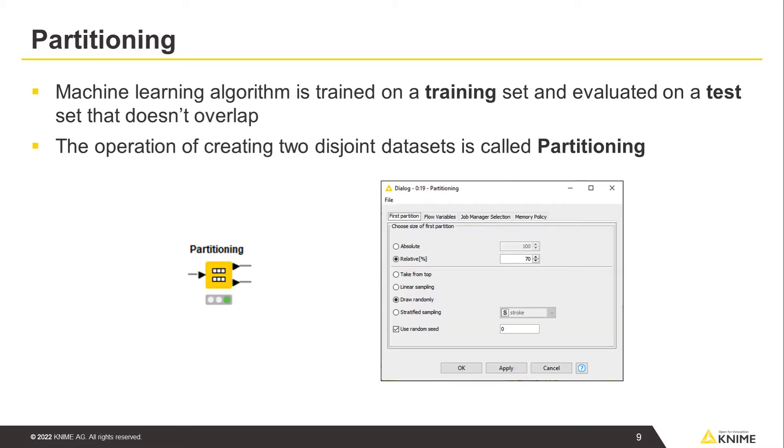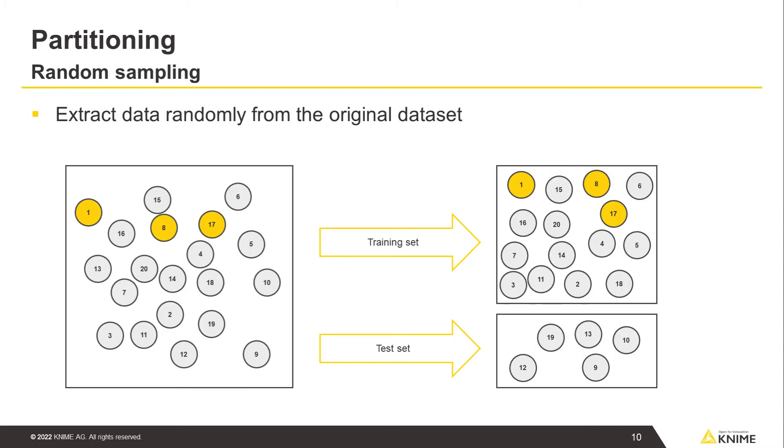In KNIME Analytics Platform, partitioning can be implemented, for example, by the partitioning node, according to one of the following sampling strategies. Random sampling extracts data randomly from the original data set. It is the standard sampling strategy.